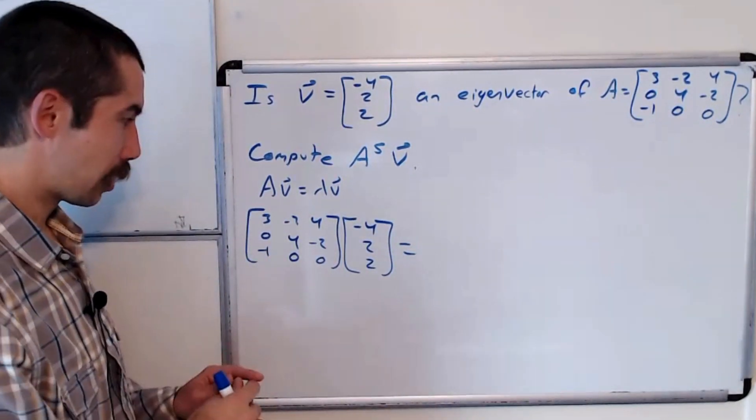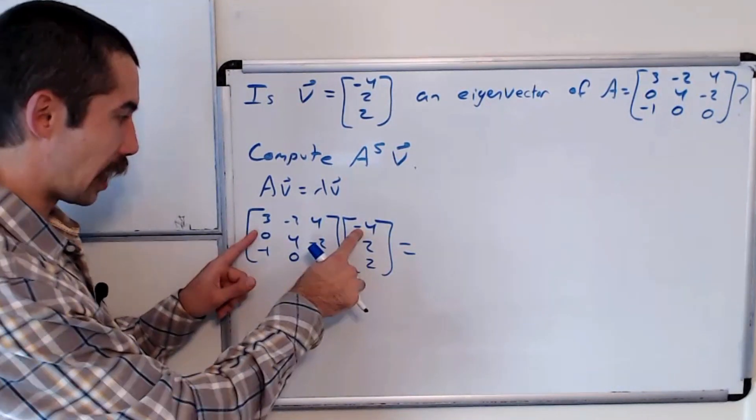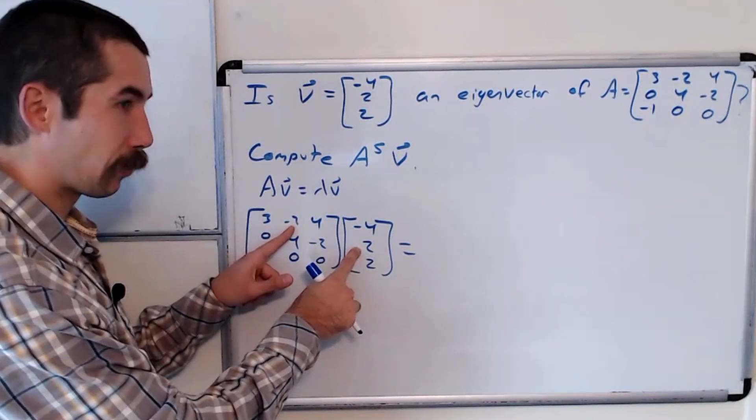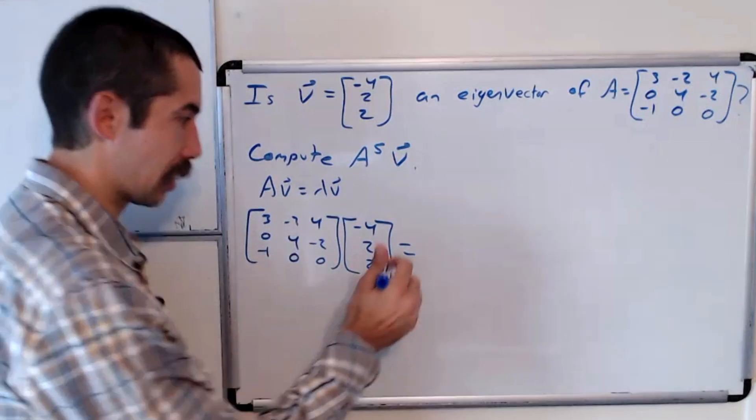All right, and when we work this out, this top entry is negative 12 minus 4 plus 8, negative 8.